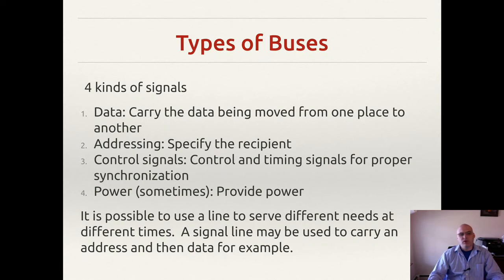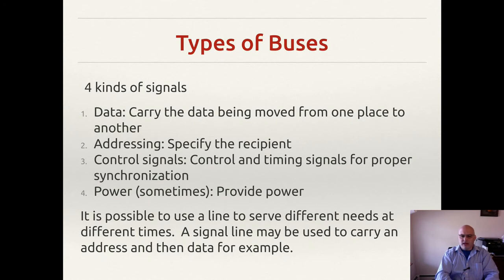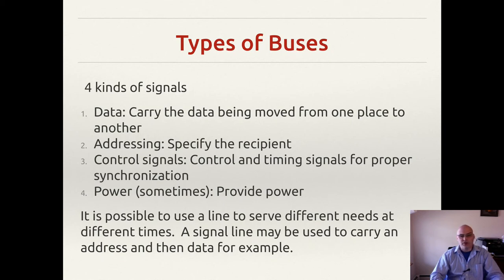All buses have lines, but there are actually different types of lines. There are four different types of signals we might want to send over a bus. It is possible to send different voltage levels for some of these — a good example would be power, where a bus might carry different voltage levels for different power requirements, say 3.3 volts versus 5 volts.